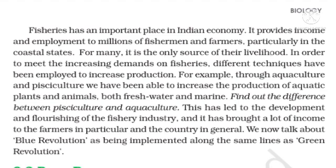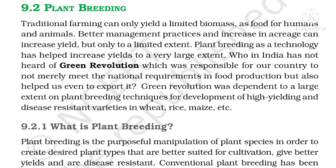Plant Breeding. Traditional farming can only yield a limited biomass as food for humans and animals. Better management practices and increase in acreage can increase yield but only to a limited extent. Plant breeding as a technology has helped increase yields to a very large extent. Green Revolution is responsible for our country not merely meeting the national requirement in food production but also being able to export it. Green Revolution was dependent to a large extent on plant breeding techniques for development of high yielding and disease resistant varieties in wheat, rice, maize, etc.